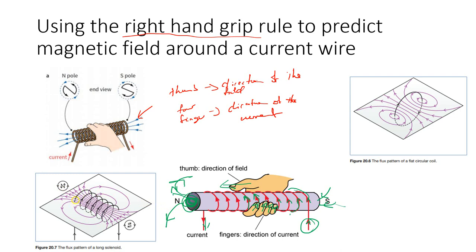Here is another view: the current is coming out of the paper at one end. Using the right hand grip rule, your four fingers must curl over, showing how the current is flowing from one side to the other. Automatically your thumb points in one direction, telling you that this side is the north side of the magnet.